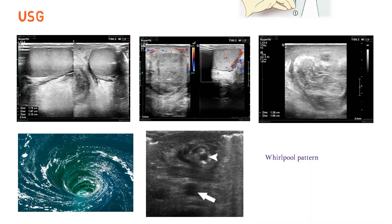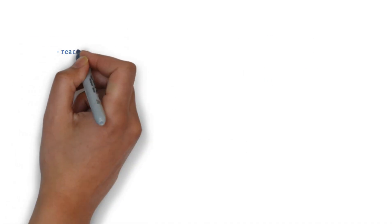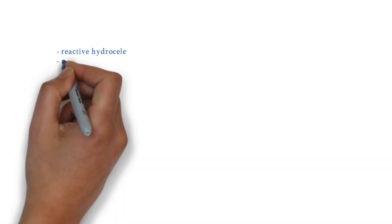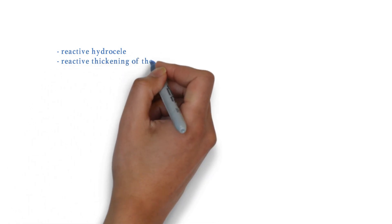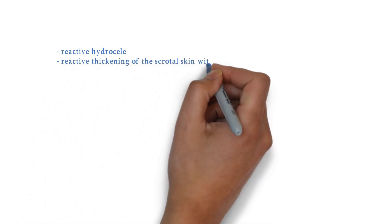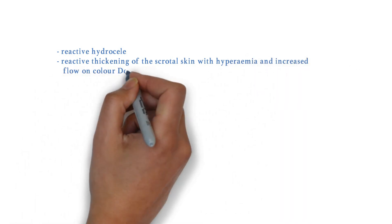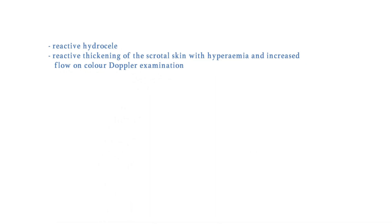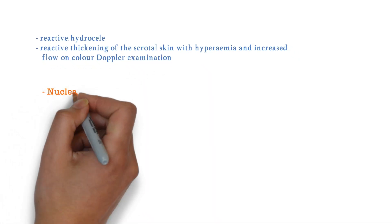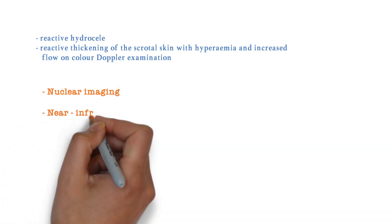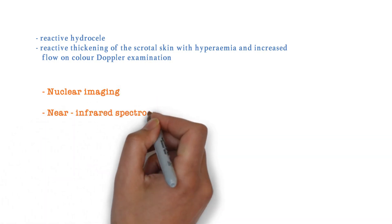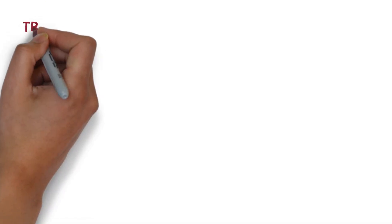Color Doppler imaging is the most powerful and rapid technique to establish a diagnosis of testicular torsion and to distinguish it from epididymo-orchitis. There can also be reactive hydrocele or reactive thickening of the scrotal skin with hyperemia and increased flow on color Doppler. The diagnosis can also be aided by nuclear imaging and near-infrared spectroscopy.